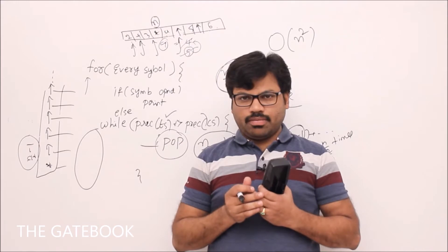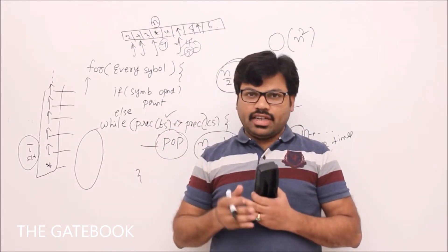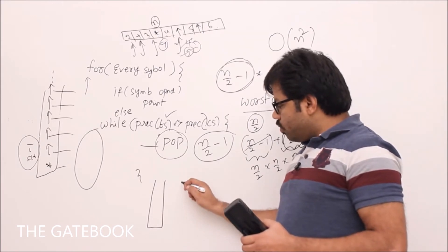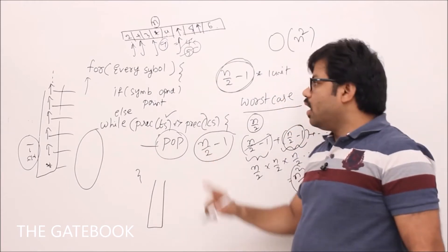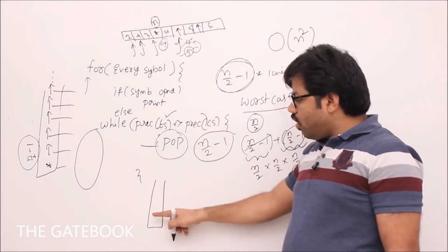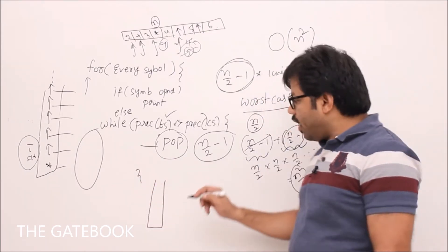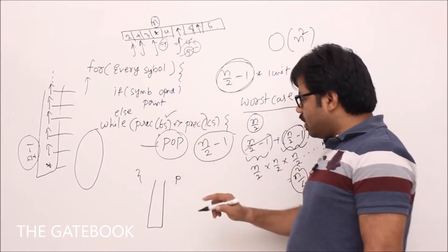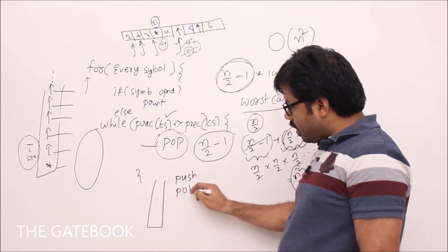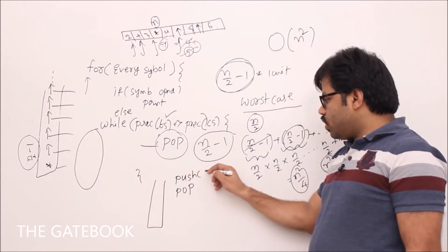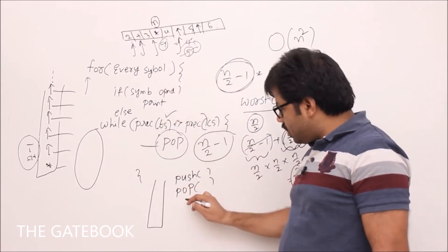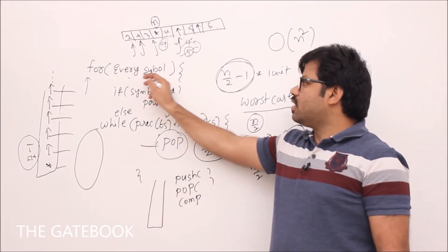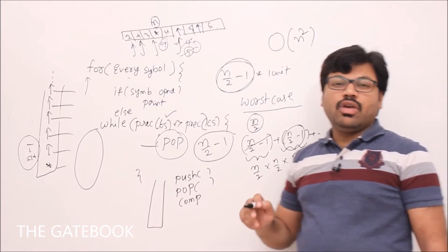In amortized analysis, rather than focusing on the code, we go back to the idea: when you have a stack, if the symbol is an operand, you simply print it; if it's an operator, you either push it or pop some elements and then push something. In the entire algorithm, for every comparison of priority, you are either pushing an element or popping an element. So there are push operations, pop operations, and comparisons.